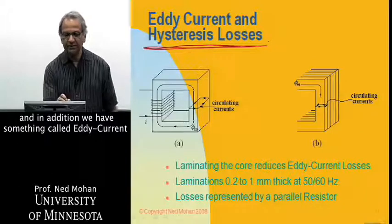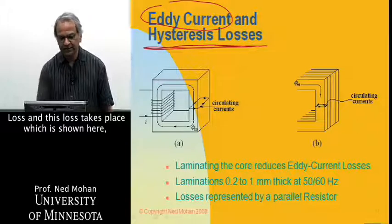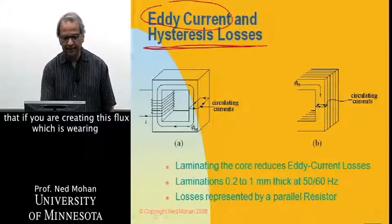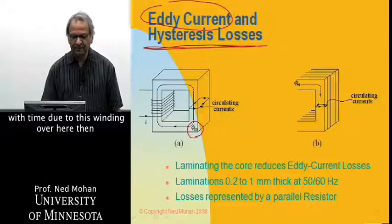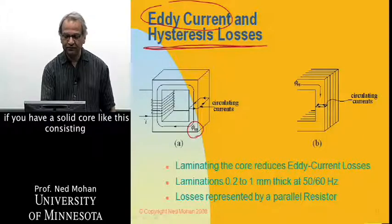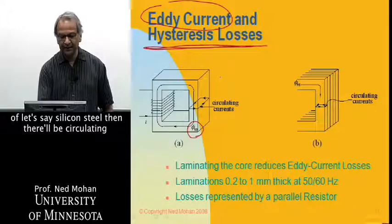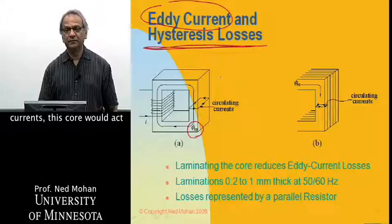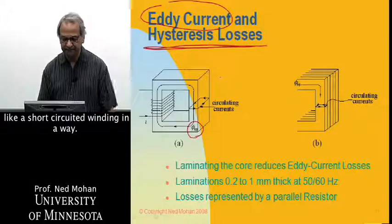And in addition, we have something called eddy current loss. This loss takes place, which is shown here, if you are creating this flux which is varying with time due to this winding over here, then if you have a solid core consisting of, let's say, silicon steel, then there will be circulating currents. This core would act like a short-circuited winding in a way.